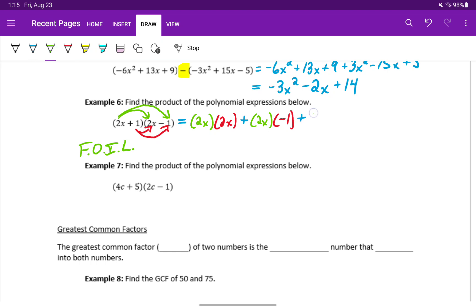For the inside terms, that will be the 1 from the first binomial, multiplied by the 2x from the second binomial. And then for the last terms, we'll take the positive 1, times the negative 1.